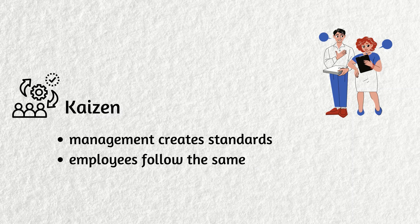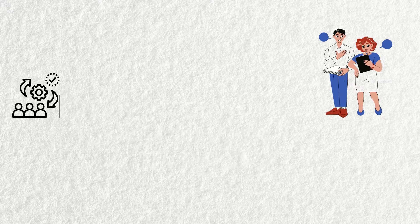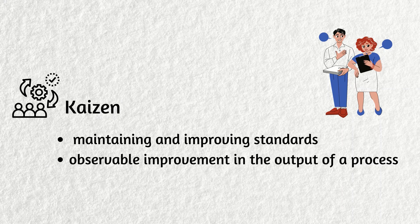In any business, management creates standards that employees must follow to perform the job. In a Kaizen environment, maintaining and improving standards is one of the main goals of management. When standards are improved, there should be an observable improvement in the output of a process or procedure.